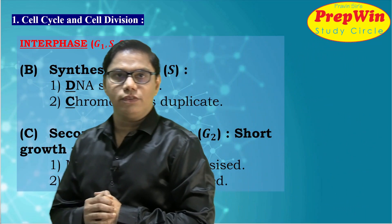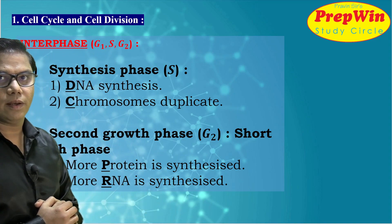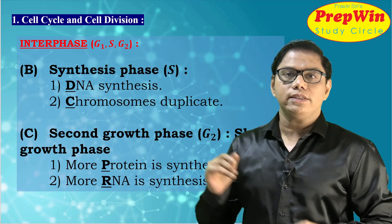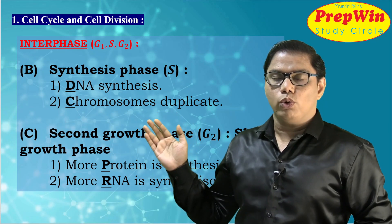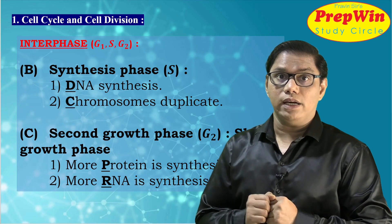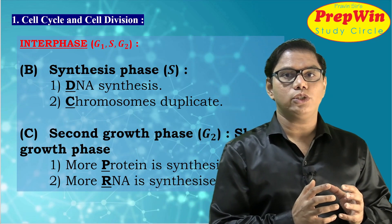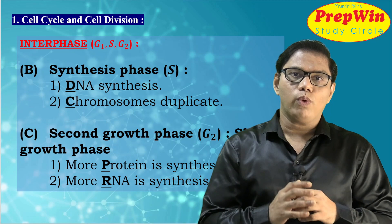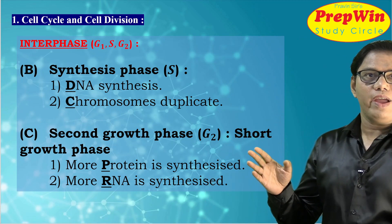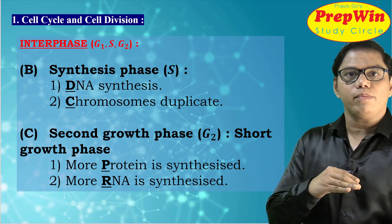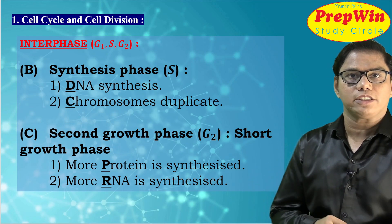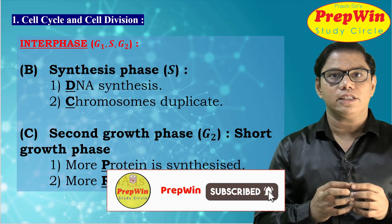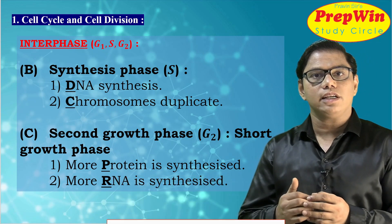Now the next two phases: the synthesis phase or S phase, and the second growth phase or G2 phase. During the synthesis phase, DNA synthesis happens and chromosomes also duplicate — a very important part of cell division. When we study the structure of chromosomes, we will discuss this in more detail. G2 phase, or the second growth phase, got its name because many of the same things that happened in G1 also happen here — more protein synthesis and more RNA synthesis.